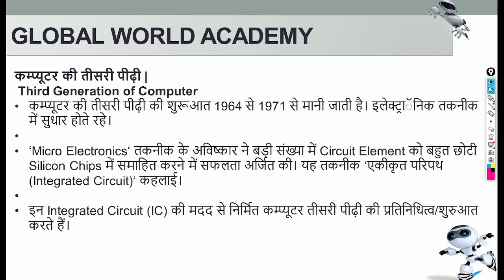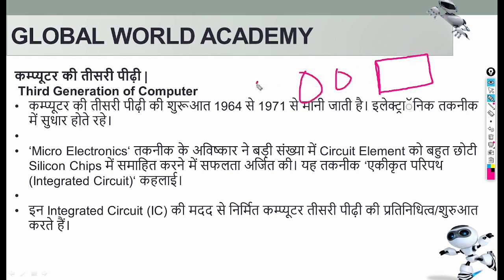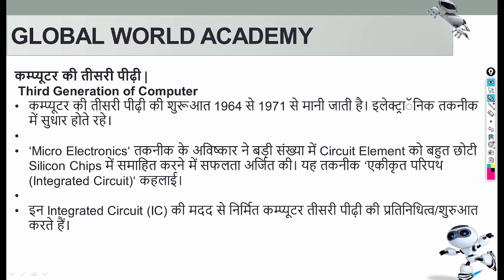The third generation lasted from 1964 to 1971. The key technology was the IC — integrated circuit. New circuits were designed on a small silicon chip. Integrated means bringing multiple things together — so resistors, transistors, and capacitors could all be placed on one chip. This significantly reduced the size of the computer further.